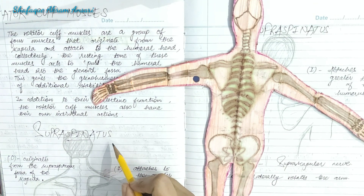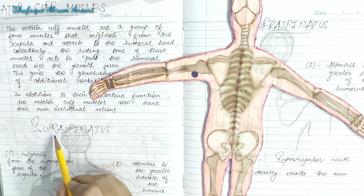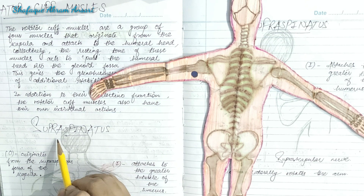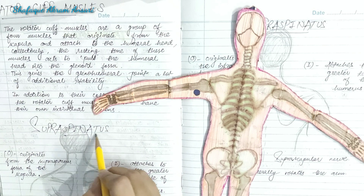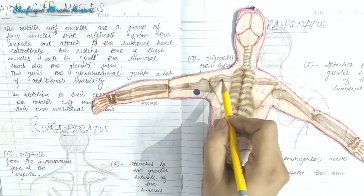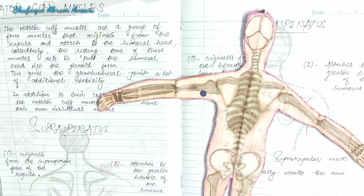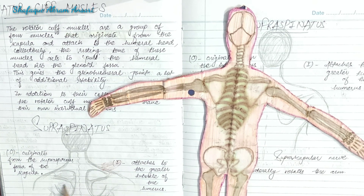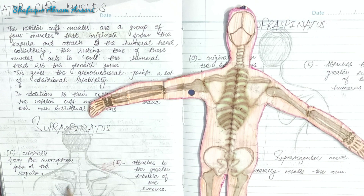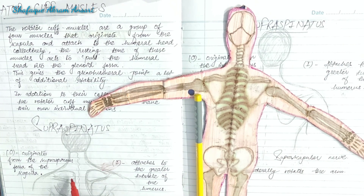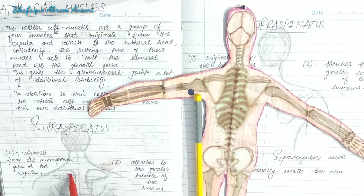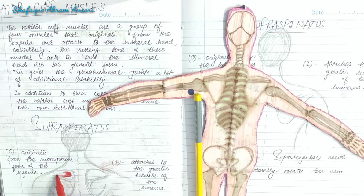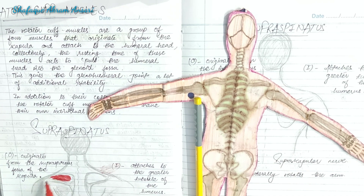The first muscle is the supraspinatus. 'Supra' means above, and 'spinatus' refers to the spine of the scapula. The supraspinatus muscle originates from the supraspinous fossa of the scapula and attaches to the greater tubercle of the humerus.